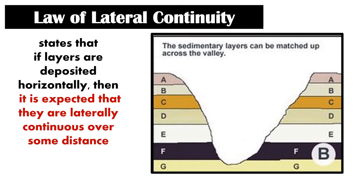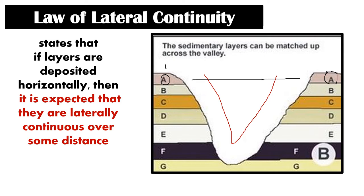The next law is the law of lateral continuity. This states that if layers are deposited horizontally, then they are expected to be laterally continuous over some distance. In simple terms, even if erosion creates a space between parts of a rock layer, we can still say that rock layers on either side of a valley or any body of water are the same age. In this picture, rock layer A on the left and rock layer A on the right are the same age — they separated because erosion occurred in that part.